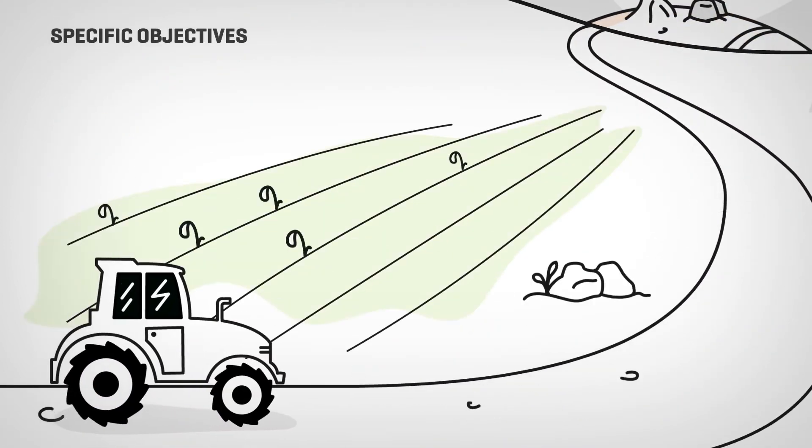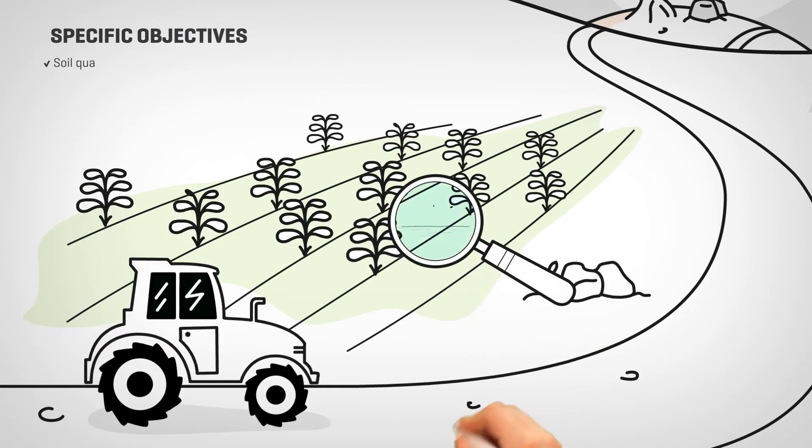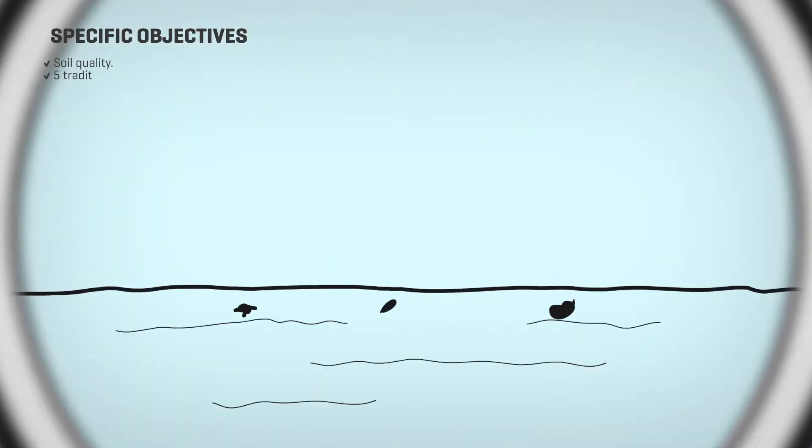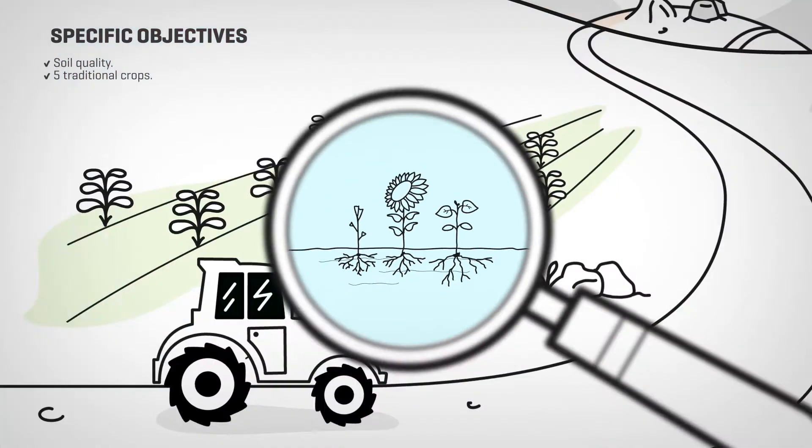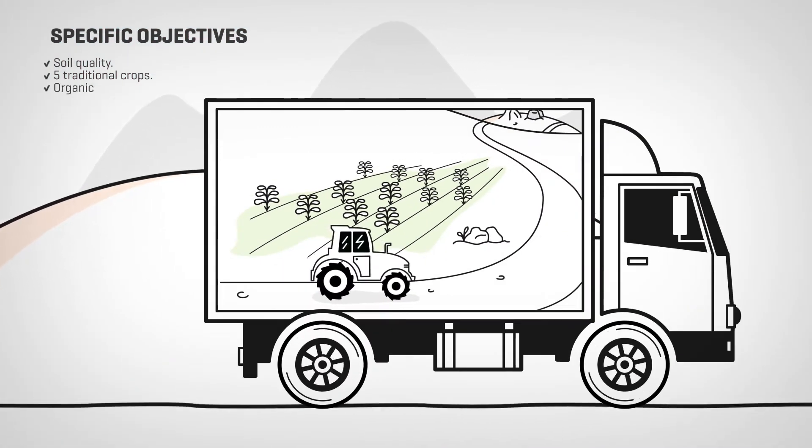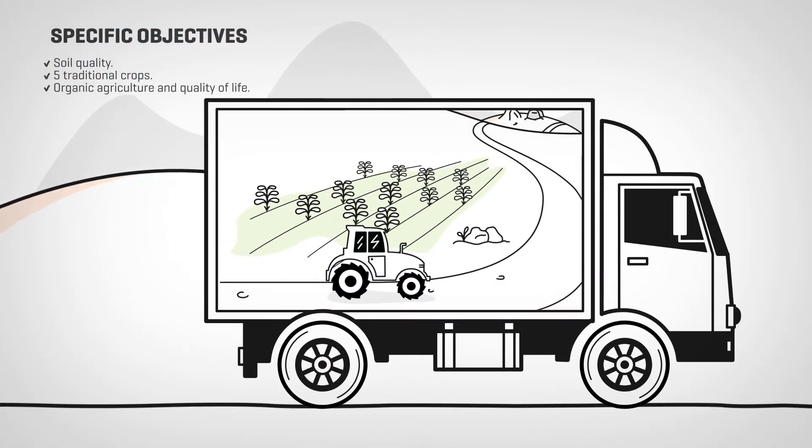Specific objectives: Improve soil quality, reintroduce at least five traditional crops, improve the common perception of organic agriculture, and improve farmers' quality of life.